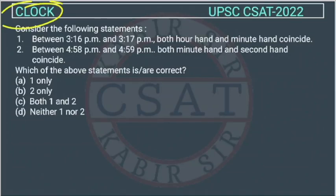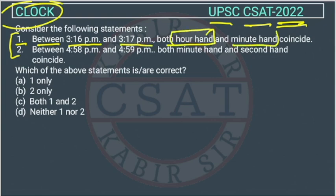This is a question of clock asked by UPSC in CSAT paper of 2022. Consider the following statements. They have given two statements. First statement: Between 3:16 p.m. and 3:17 p.m., both hour hand and minute hand coincide. Whether this statement is correct or not, we have to find out.